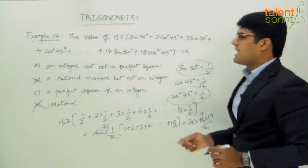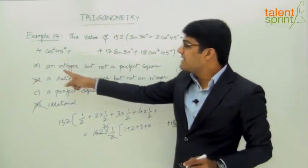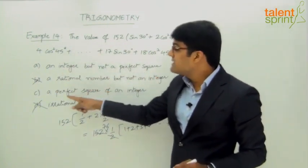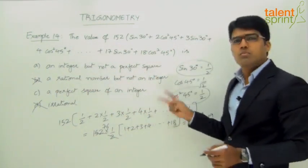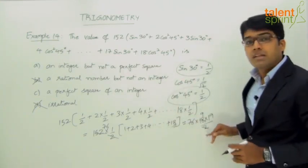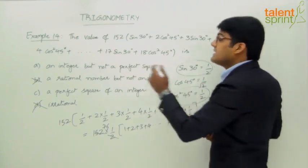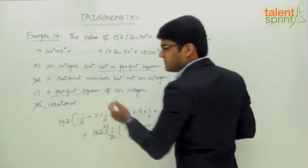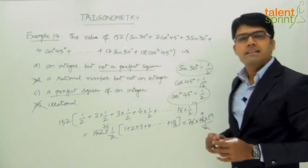Then there are only two possible answers. Either option A which says it is an integer but not a perfect square, or option C which says it is a perfect square of an integer. So both are possible. Let's look at which is correct. Definitely this is an integer. The question that arises here is, is it a perfect square or not? Based on that we can select either A or C.